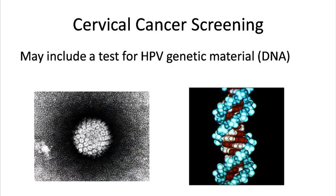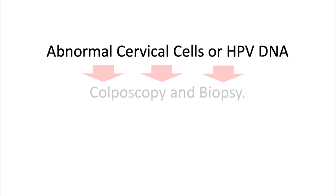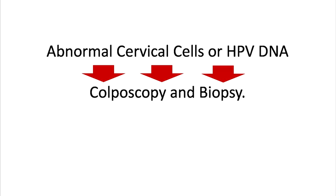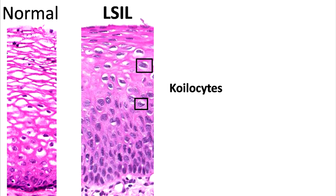Cervical cancer screening may also include testing for genetic material from the virus itself. If abnormal cervical cells are detected on a pap, or HPV DNA is detected, then a doctor will perform a colposcopy — a way for a doctor to examine the cervix more closely. A biopsy will also be performed, where a small sample of tissue will be collected for further testing. Low-grade lesions have coilocytes with large, irregularly shaped nuclei, which look different when compared to the cells in the normal biopsy on the left.